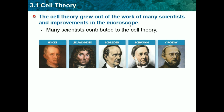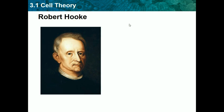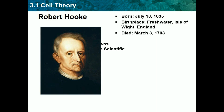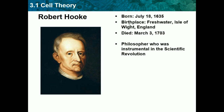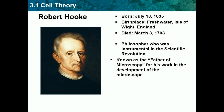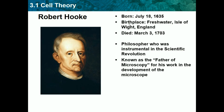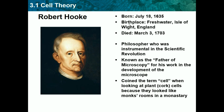Many scientists contributed to the cell theory. We don't need to know when they were born, when they died, or their birthplace. Robert Hooke was a philosopher who studied the scientific revolution — he was essentially the father of microscopy for his work in the development of the microscope. He coined the term 'cell' when looking at a plant cell, because they looked like monks' rooms in a monastery — like little cells. 'Cell' also means room, like a jail cell.